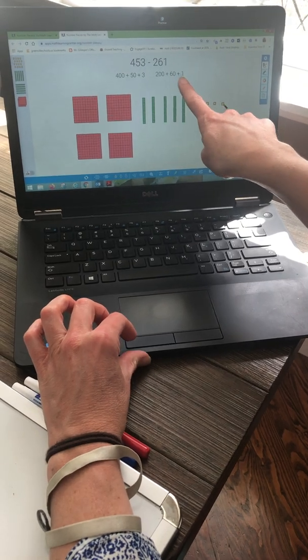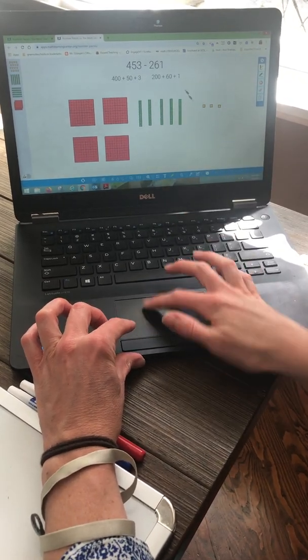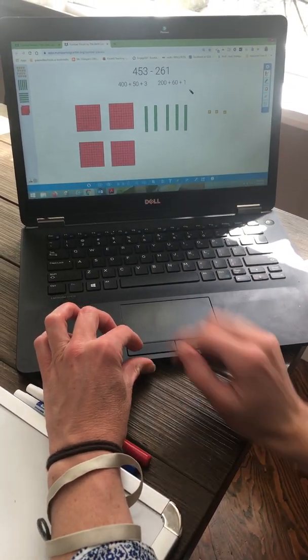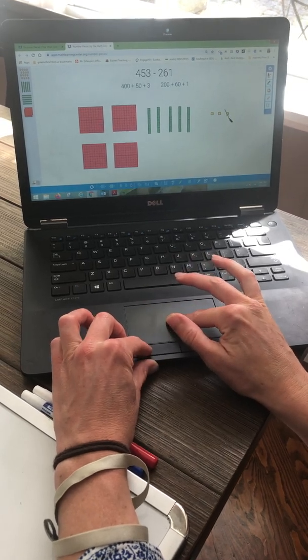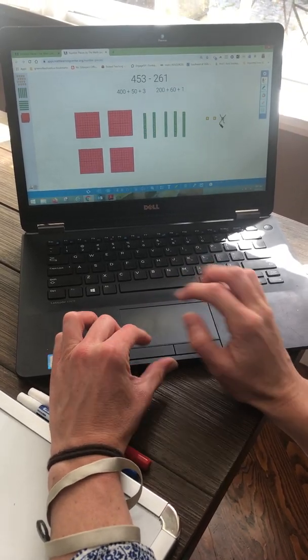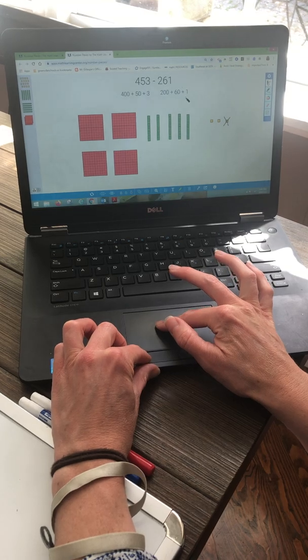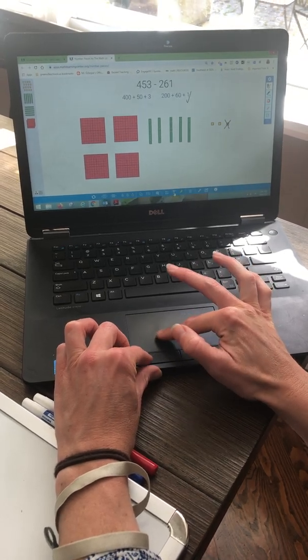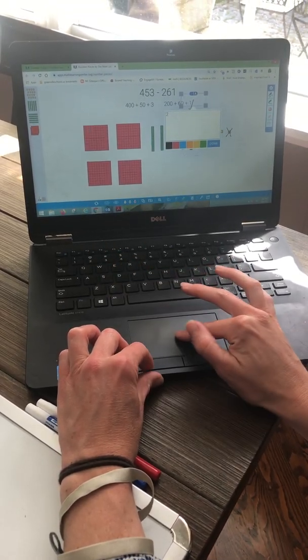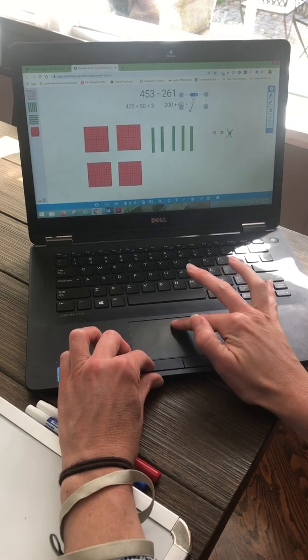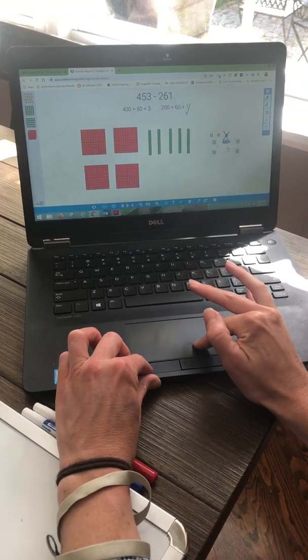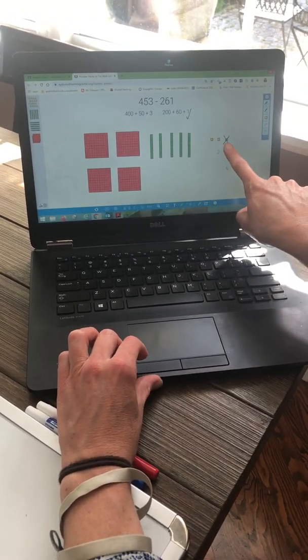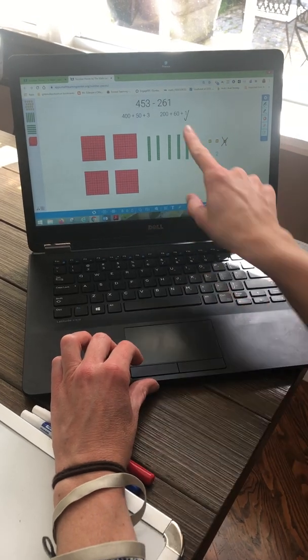Let's start with our ones place. I have three ones. I need to take away one one. I have three ones and I need to take away one one. I can do that. I have two ones left. Took one away and I have two ones left.